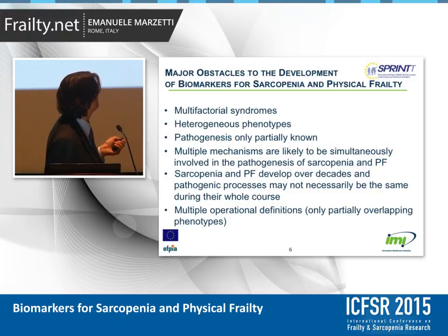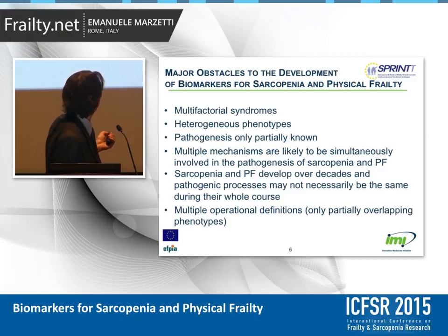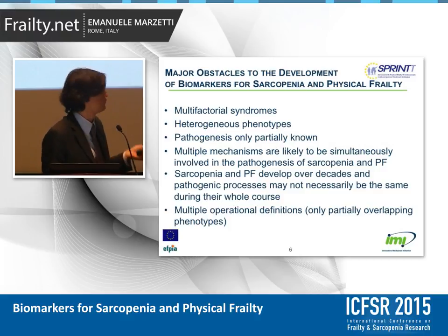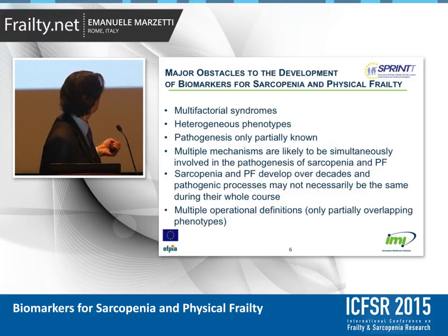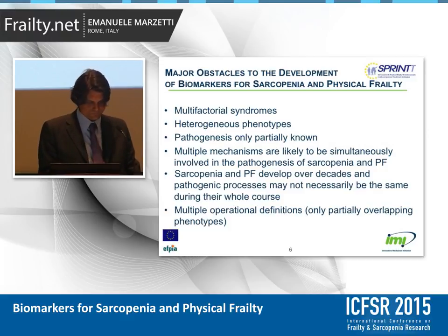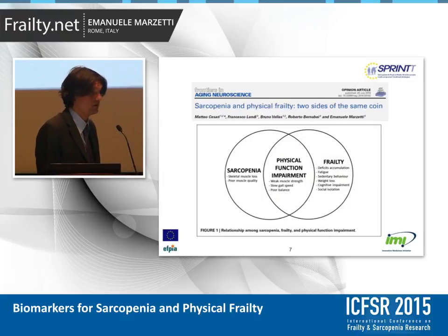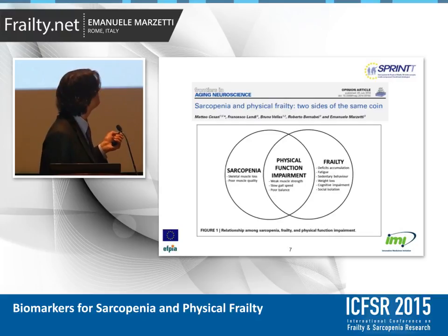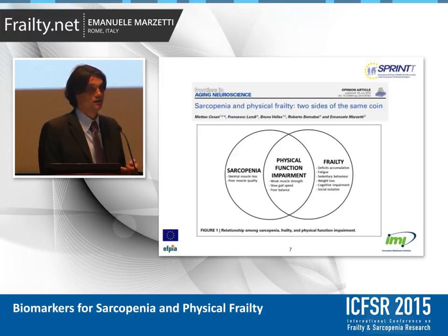On the other hand, sarcopenia and physical frailty, like the majority of chronic degenerative diseases, develop over the course of decades, and pathogenesis may not necessarily be the same during their progression — meaning a biomarker that is good in one stage may be completely useless in another. And the last point is probably the most important: there are too many operational definitions of sarcopenia and physical frailty, and the phenotypes these conditions recognize are only partially overlapping. The SPRINT project is introducing a new and standardized operational definition of physical frailty and sarcopenia, which will ideally overcome all the limitations of presently available definitions.